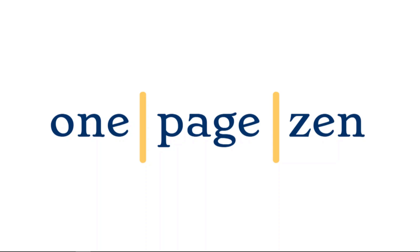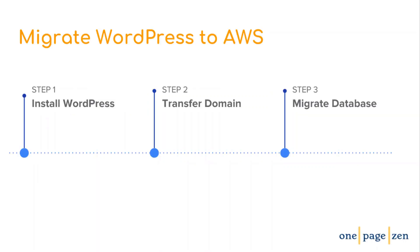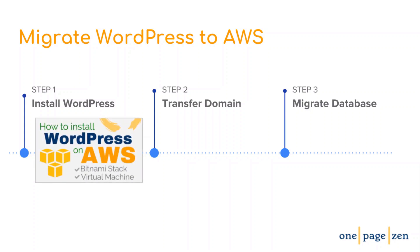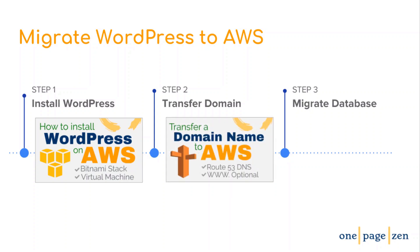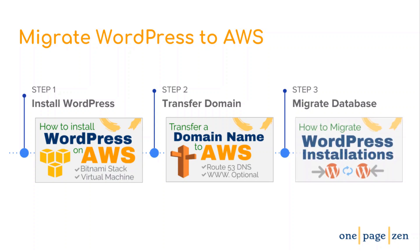Hello everyone, it's Joe from OnePageZen.com. Today in this tutorial I'm going to show you how to quickly and easily migrate a full WordPress website to Amazon's AWS cloud platform. This tutorial is broken down into three steps. In step one I'll show you how to install WordPress on an Amazon AWS EC2 virtual machine. In step two, how to transfer your domain name to your new WordPress virtual machine on AWS. And in step three, how to migrate your existing WordPress database to your new WordPress installation on Amazon AWS.